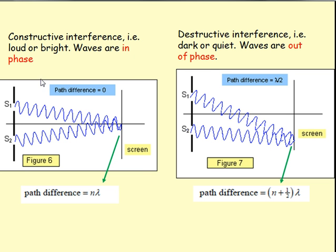Here's an example with light: constructive interference for two different slits. You have source one and source two, and when the light meets at the center of the screen, the waves are in phase — an integral number of wavelengths apart — creating a bright spot. However, if you're off-center, there's a possibility of a half-wavelength path difference between the two. The waves will be out of phase and create a dark or quiet zone, called destructive interference.